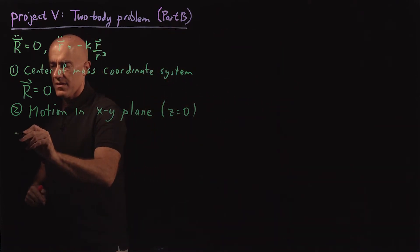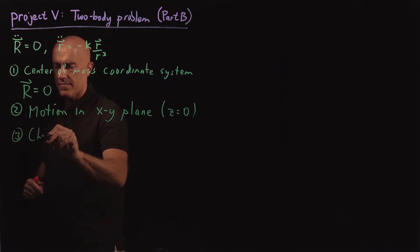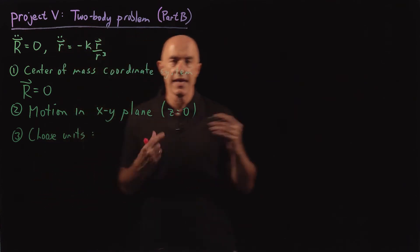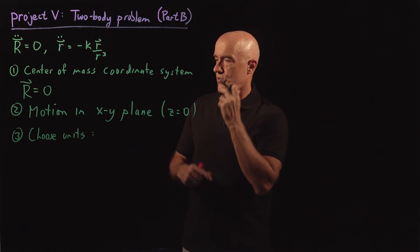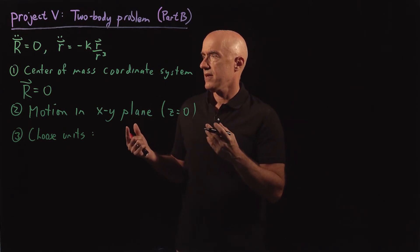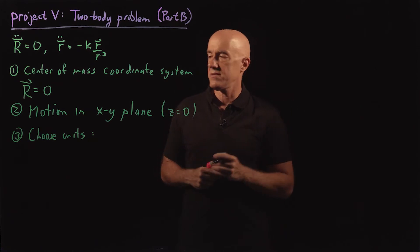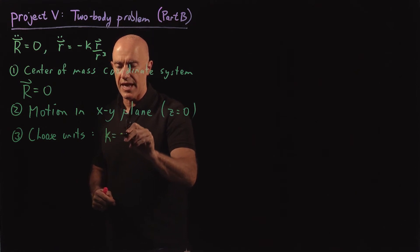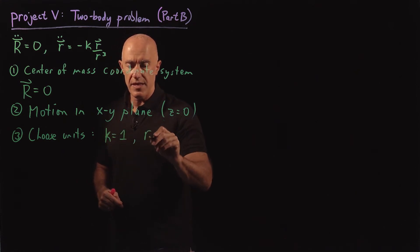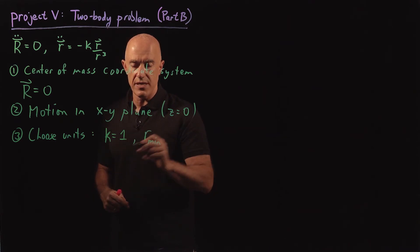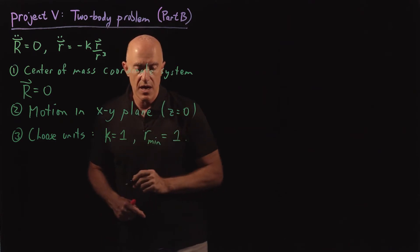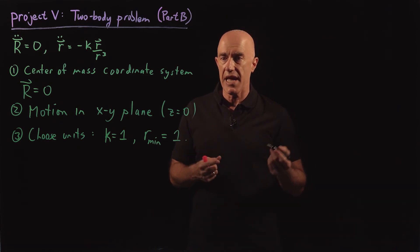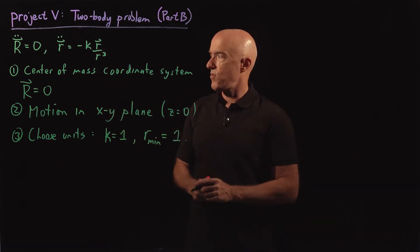Three, we have this k here. So three, we can choose units to solve this problem in. K has some dimension. And if we choose units using k and using also the minimum distance between the masses, it's equivalent to solving this problem where we can just set k equal to one. And then the minimum distance between m1 and m2, we also define that to be one. So doing this is essentially choosing units for time and length to simplify the equations.